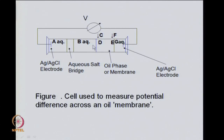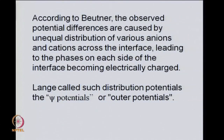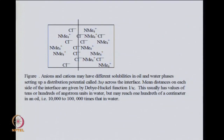Butner believed the potential developed because of unequal distribution of anions and cations between the organic and aqueous phases. The other school believed it was adsorption at the interface that led to the recorded potential. It turns out that distribution contributes to potential development in the equilibrium system. Whatever potential is developed is called delta phi. The contribution from unequal distribution gives the psi potential; any adsorption contribution gives the contact potential delta V. Delta psi and delta V together contribute to delta phi.